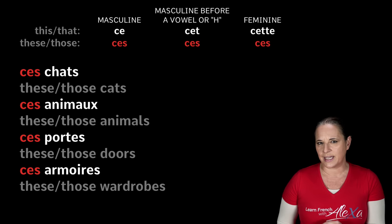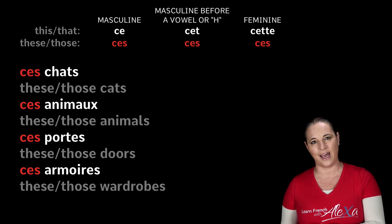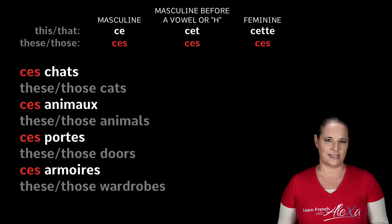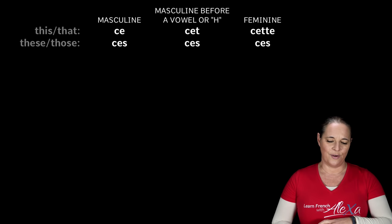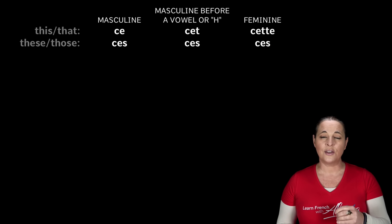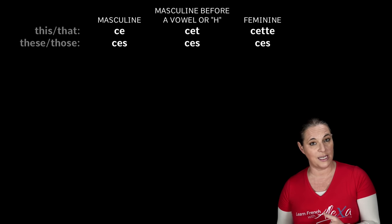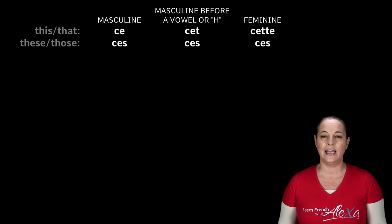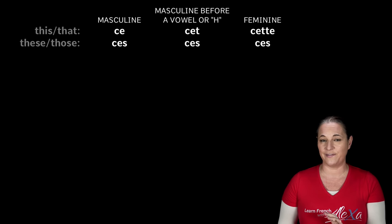As you can see, the difficulty is finding the right gender of each word in order to find the right demonstrative adjective. This comes with practice. We're going to have a list of words, and I would like you to try to identify: is the word feminine? Is it masculine? Does it begin with a vowel? Is it plural? In order to choose the right demonstrative adjective.